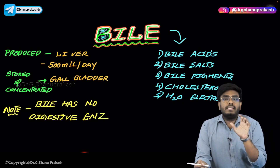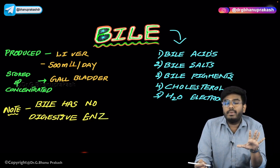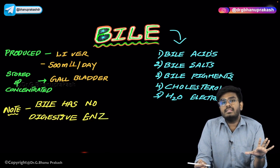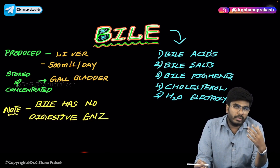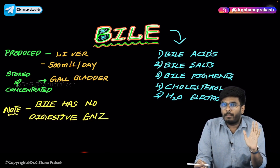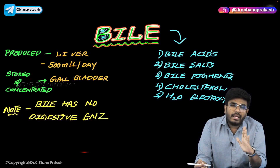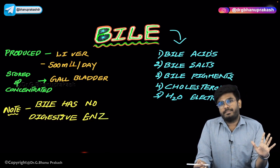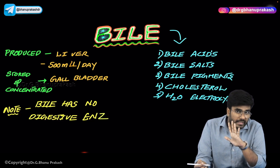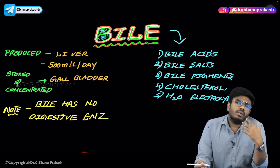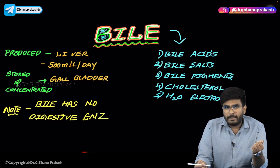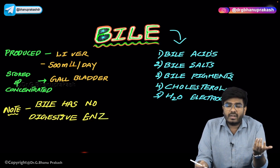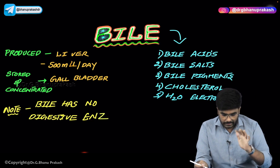Bile does not have any lipases, amylases, or proteases. So bile does not have any digestive enzymes. Then what is the role of bile? What is the role of these bile acids and how are they going to help in the process of digestion?